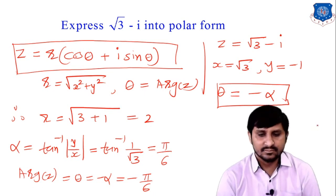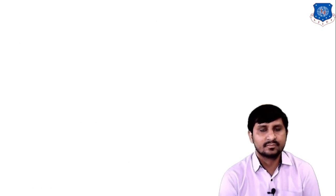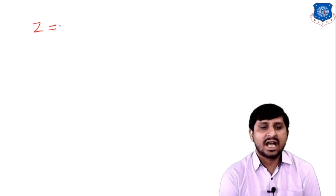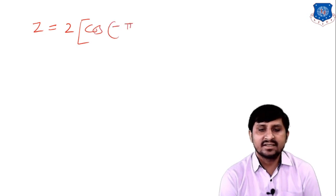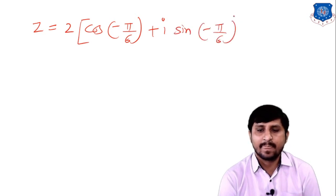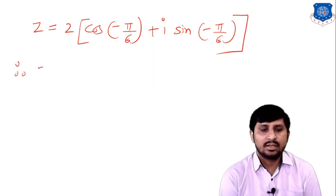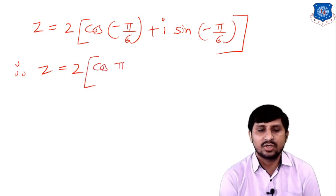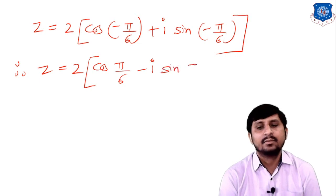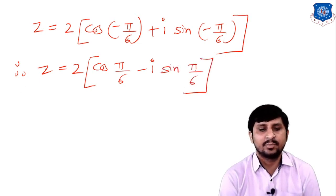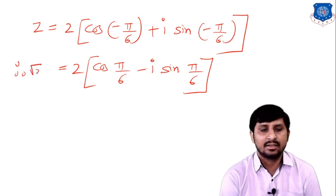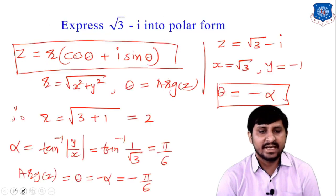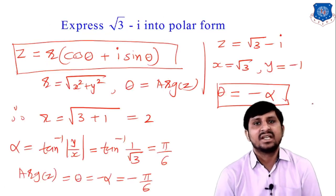Now substitute r = 2 and θ = −π/6 into the polar form. Since cosine is an even function and sine is an odd function, z = 2(cos(π/6) − i sin(π/6)). So √3 − i = 2(cos(π/6) − i sin(π/6)). This is the polar form. Thank you.